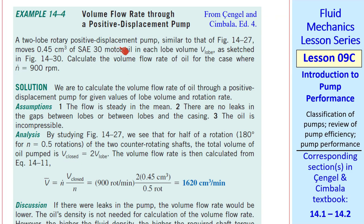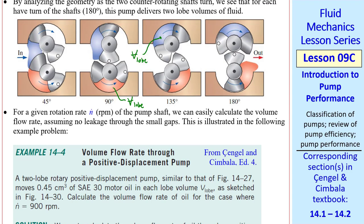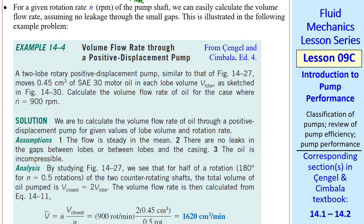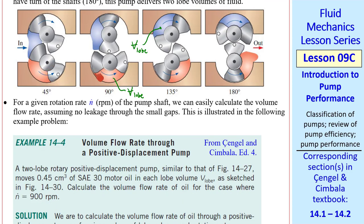A two-lobe rotary positive displacement pump, similar to what we just shown, moves this volume of motor oil in each lobe volume, V lobe. Where from the previous diagram, the volume of this pink fluid is V lobe, as is the volume of this blue fluid. Let's calculate the volume flow rate of oil for the case where n dot is 900 RPM. We assume that the flow is steady in the mean, there are no leaks, and the oil is incompressible.